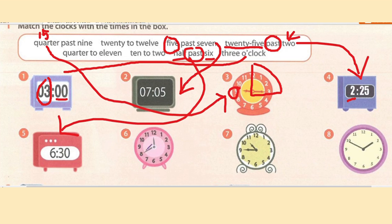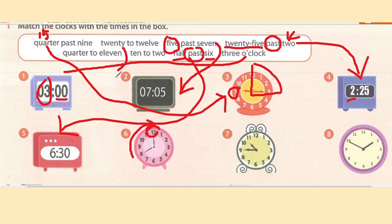Number six: the small hand is approaching number twelve — jarum pendek menghampiri pukul 12. There are 20 minutes left to reach number twelve. So the answer is twenty to twelve — 20 minutes approaching twelve.